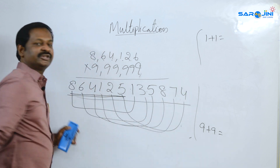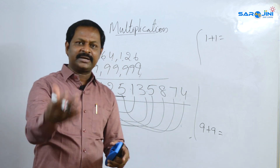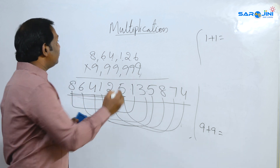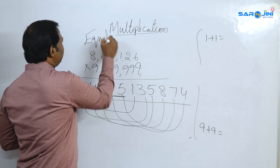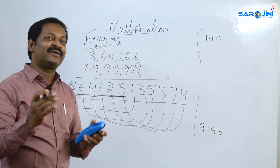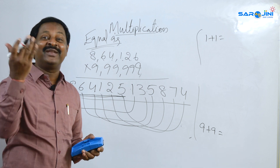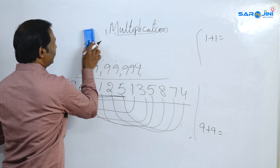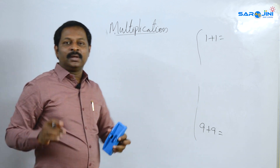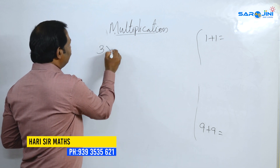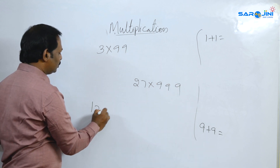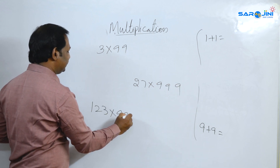You will get the answer using equal 9s. Practice: 3 into 99, 27 into 999, 3 into 99,999. You can do equal nines again and again with this method.